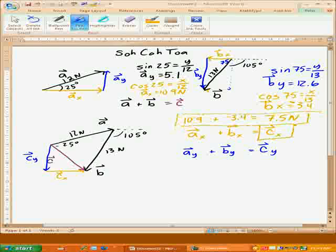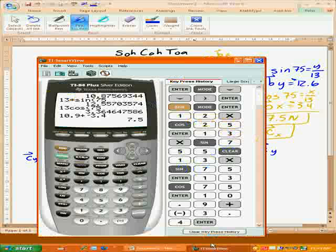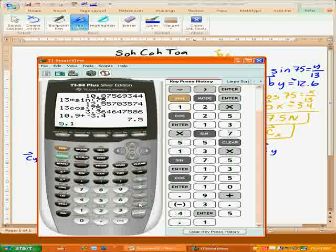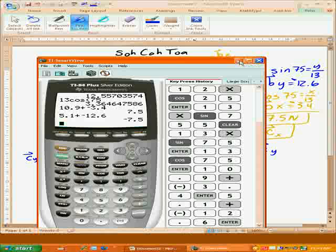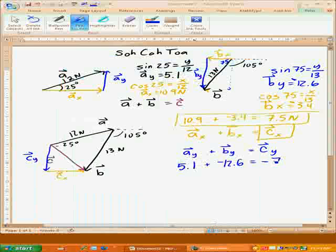And then I'll do the same thing right here with the Ys. So AY was 5.1, and that was going up, so that was positive. And then BY was going down, so that's going to be negative, so plus negative 12.6. And we add those together, 5.1 and negative 12.6, so 5.1 plus negative 12.6, and we get negative 7.5. Whoa, that's pretty crazy, didn't plan on that one. Negative 7.5, and so that would be C in the Y direction.